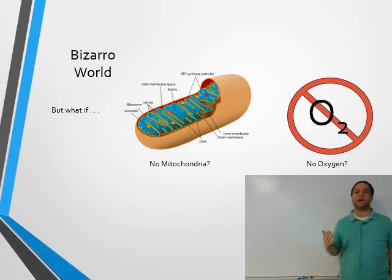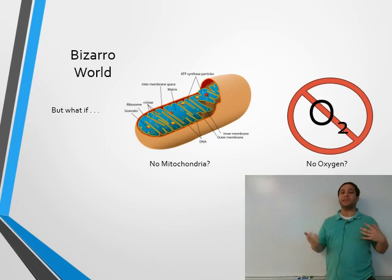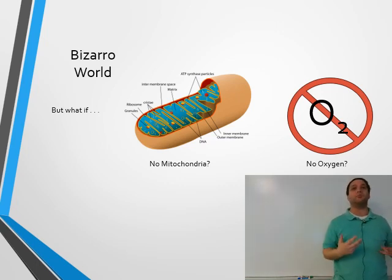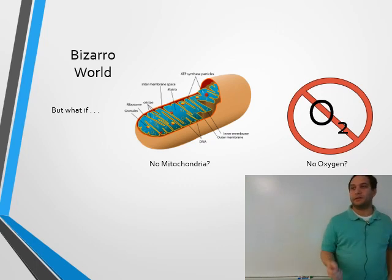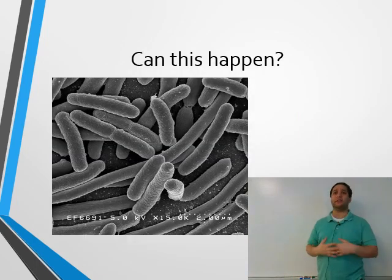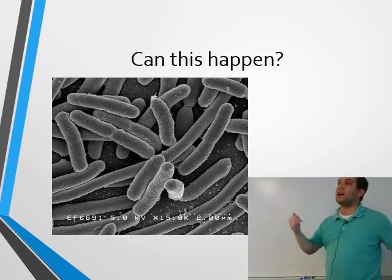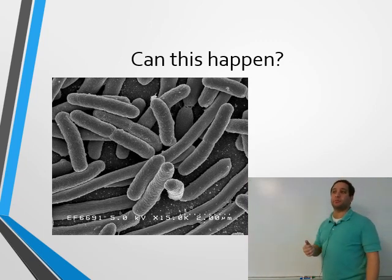There are cases where we might not have oxygen, and cases where there's no mitochondria. What organisms would have no mitochondria? Prokaryotes. Prokaryotes absolutely lack those internal compartments, so they cannot undergo aerobic cellular respiration.